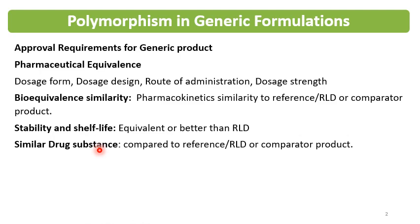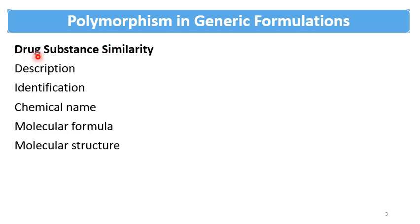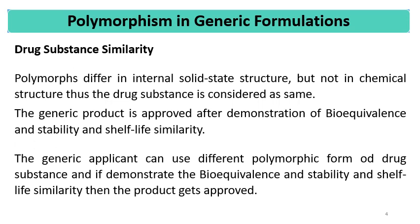Drug substance similarity can be shown by description, identification, chemical name, chemical formula, and molecular structure. If these are similar, regulatory authorities consider the generic formulation to contain the same drug substance. Therefore, if a generic formulation uses different polymorphs or amorphous material, it is still approved, as different polymorphs do not constitute a different drug substance — they fall into the category of drug substance similarity.